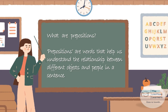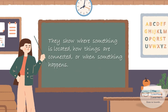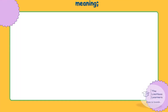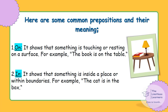Prepositions are words that help us understand the relationship between different objects and people in a sentence. They show where something is located, how things are connected, and when something happens. Here are some common prepositions and their meanings. 'On' — when do we use 'on'? It shows that something is touching or resting on a surface.